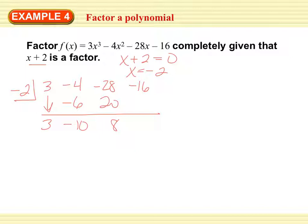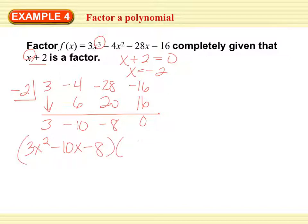Multiply and add. I didn't get a remainder of 0 — I knew I had done something wrong. After correcting, if I start with a cube and divide by a first power, my answer is 3x squared minus 10x minus 8, and I have (x+2) as one factor. This polynomial has now factored into those two pieces.